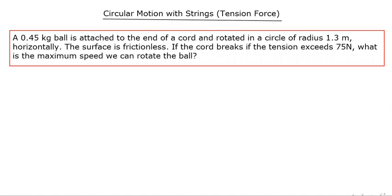Let's take a look at this question. You have a 0.45 kilogram ball attached to the end of a cord which is rotated in a circle of radius 1.3 meters, and this is a horizontal circle.